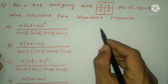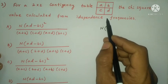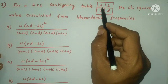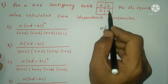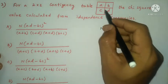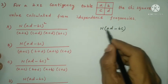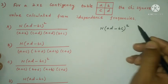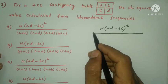The formula is n into the 2 by 2 matrix determinant upon the row and column totals. That is the numerator is n into AD minus BC the whole square, denominator is